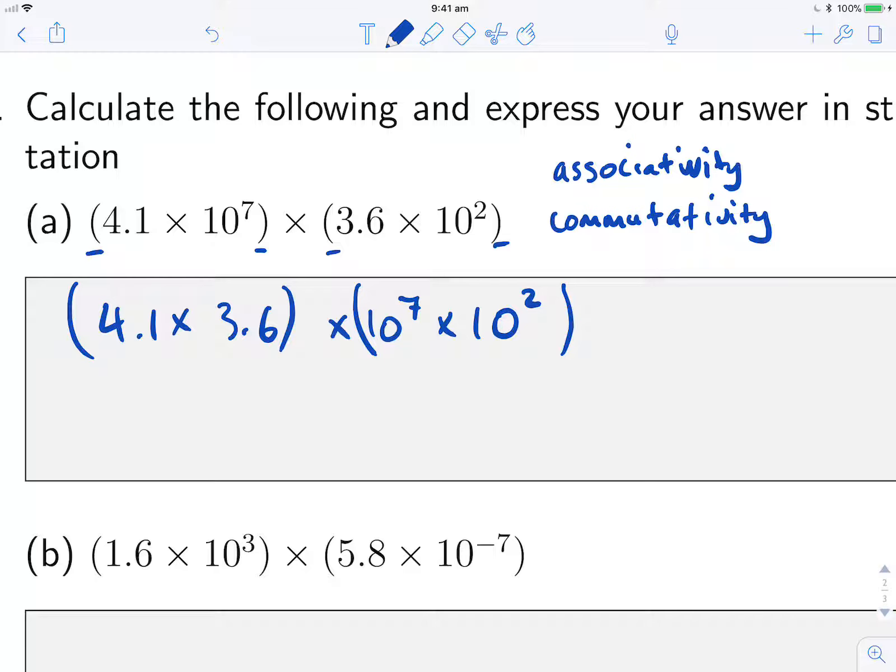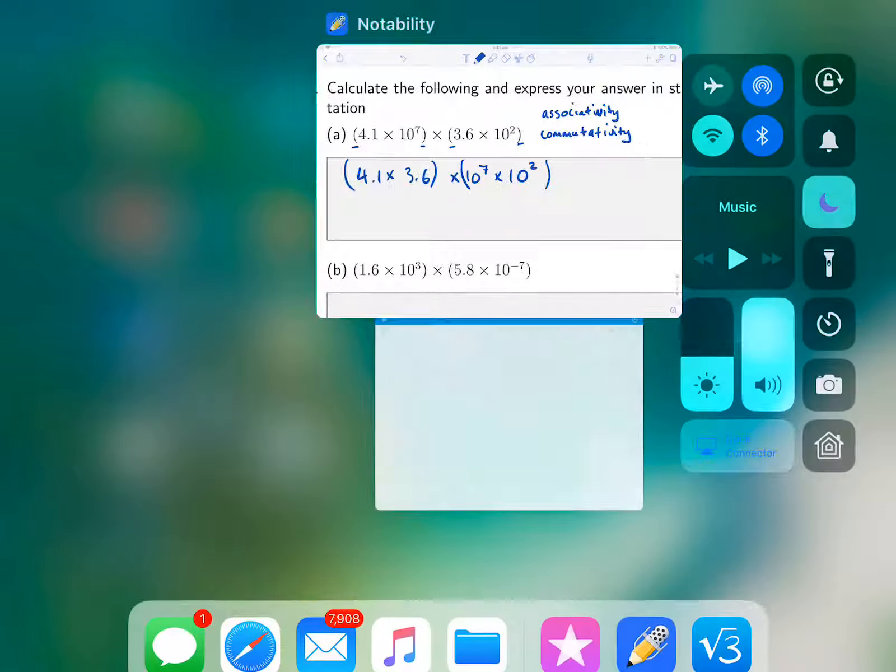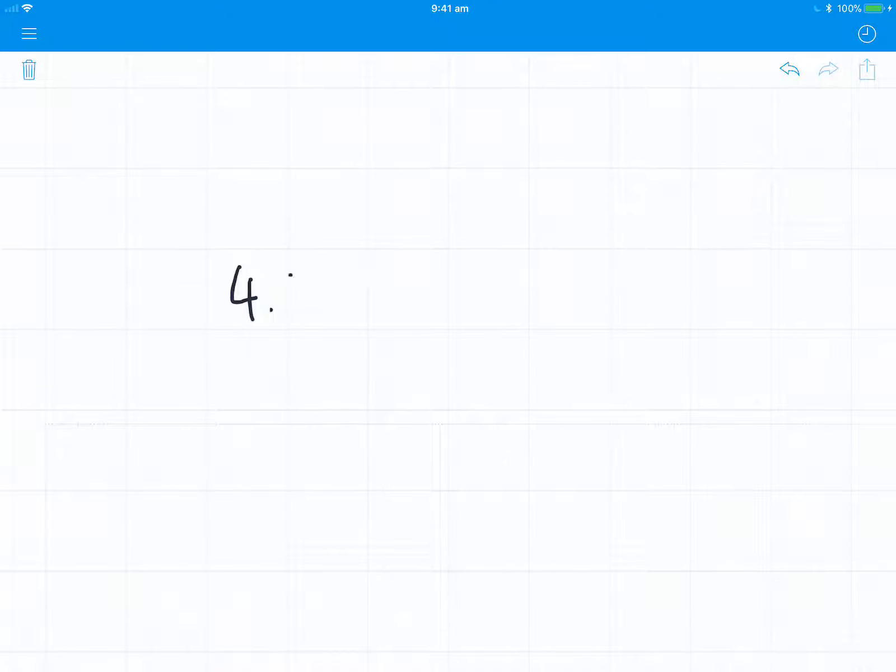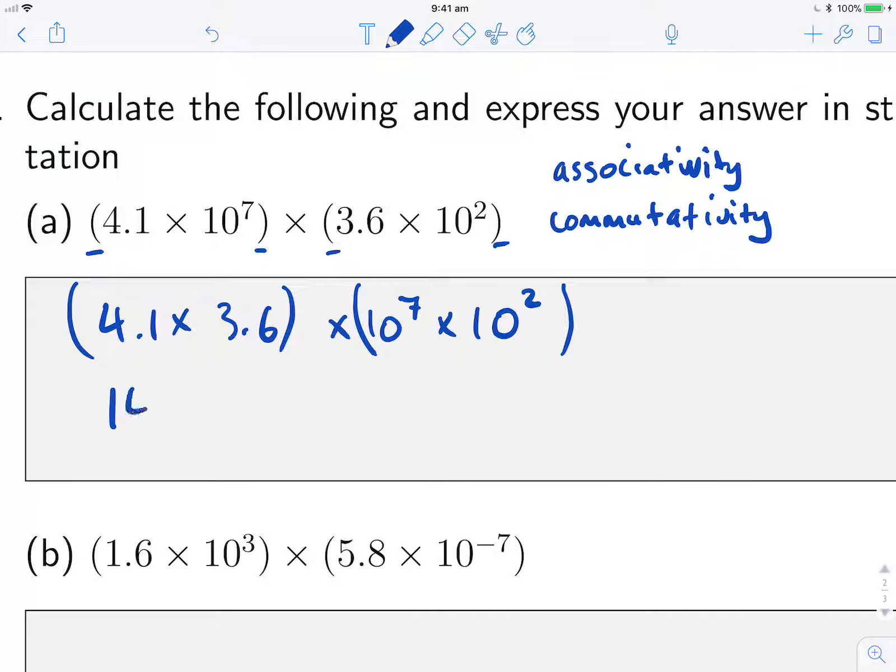So I'm going to multiply 4.1 and 3.6, and then multiply my two powers of 10 and simplify them into 1 power of 10. So for 4.1 times 3.6, we can use a calculator. 4.1 times 3.6 gives me 14.76, so I have 14.76 multiplied by—and remember when we're multiplying indices with the same base, both of these are base 10, we add the powers together. So this is 10 to the 7 plus 2, which simplifies to 10 to the 9.